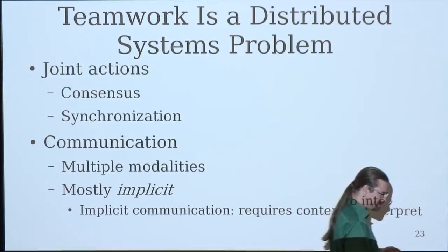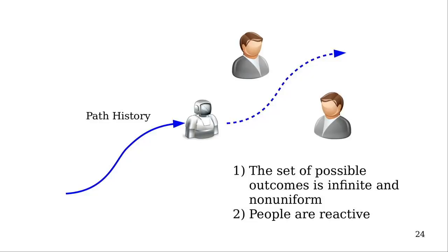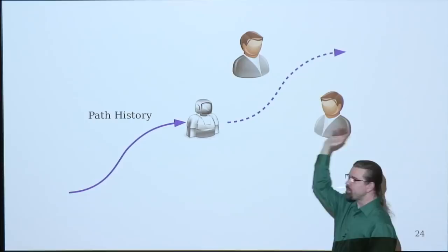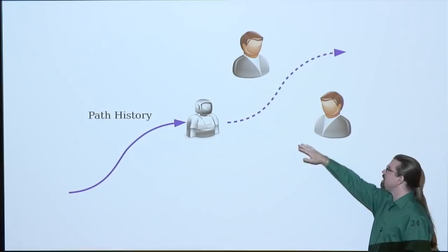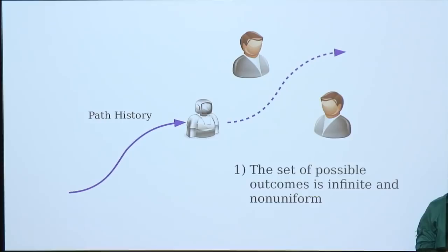Going back to the social navigation example, suppose this robot is navigating through a space, and there's some other people moving through the space. The people can observe the history of the robot, and maybe the robot is trying to plan a path that's going to be compatible with the motion of the people. So this is a hard problem for the robot because firstly, there's an infinite number of possible future trajectories that the robot could follow. So if it somehow wanted to communicate which trajectory it was picking, geometrically speaking, that's a difficult problem.